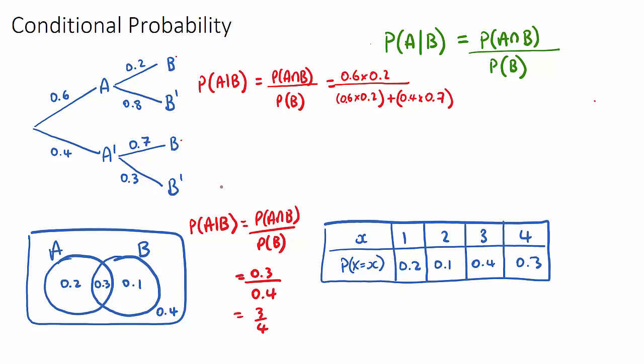This probability formula works the same for a tree diagram and a Venn diagram. But with Venn diagram questions, it's a little bit easier to observe the answer intuitively: if it says the probability of A given that B, I like to look at event B as my new sample space — 0.4 — and only look inside that circle. Then I find the probability of A inside that circle, which is 0.3 over 0.4. It's a good idea to use the formula to check your answer.